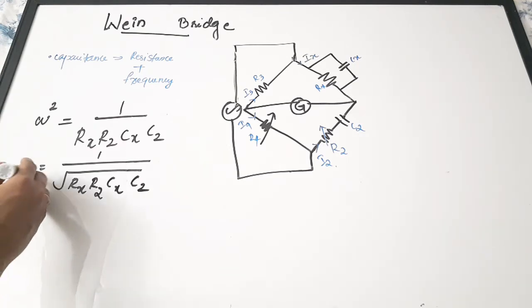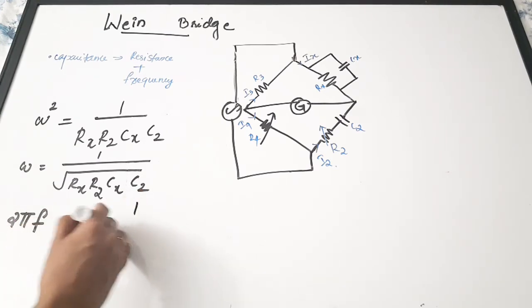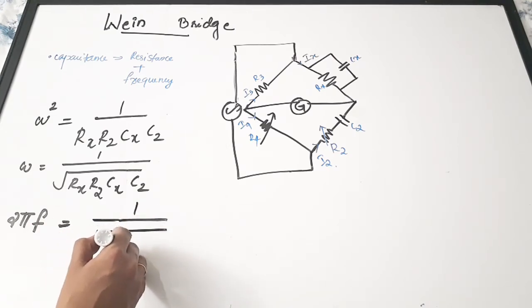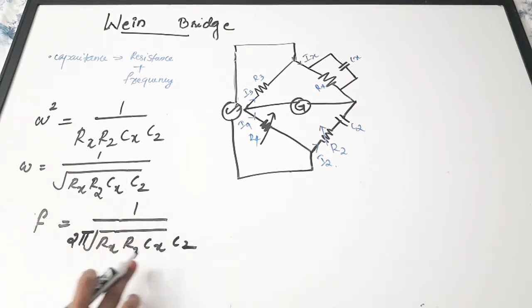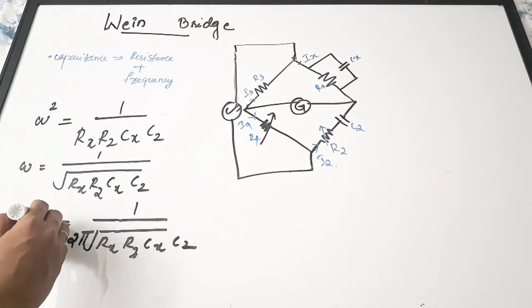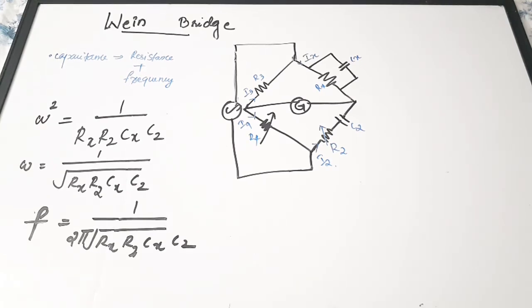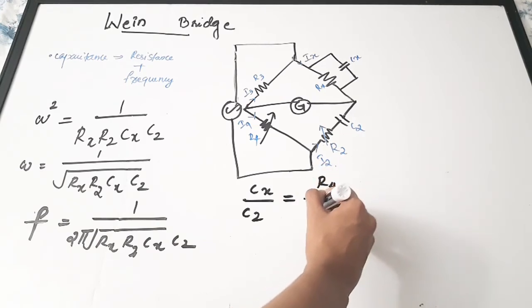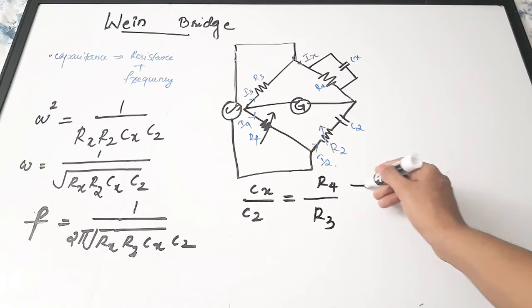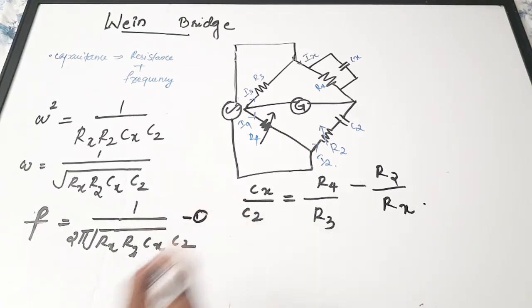In terms of ordinary frequency, since omega equals 2πf, we get 2πf = 1 / √(Rx · R2 · Cx · C2), so f = 1 / (2π · √(Rx · R2 · Cx · C2)). The second important relation between the components is: Cx / C2 = R4 / R3 − R2 / Rx.